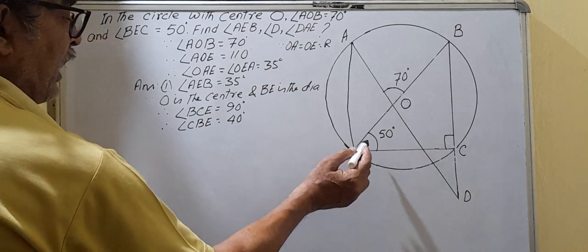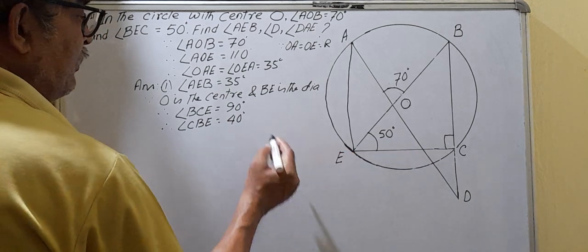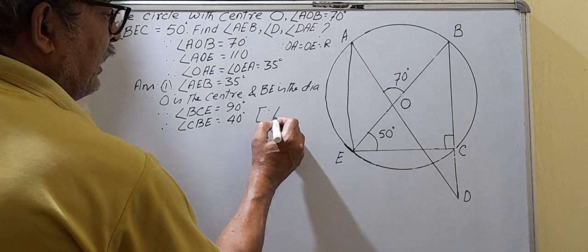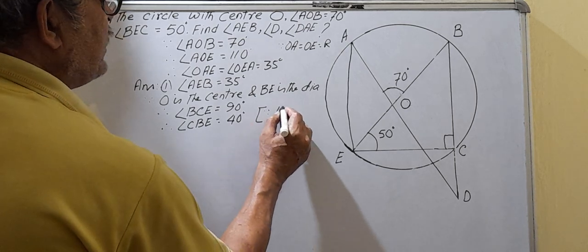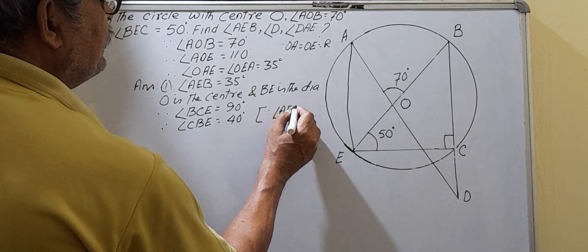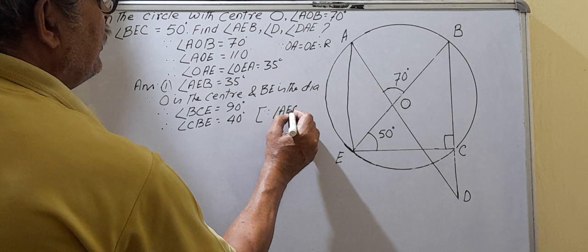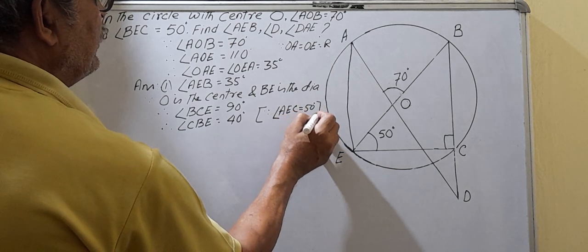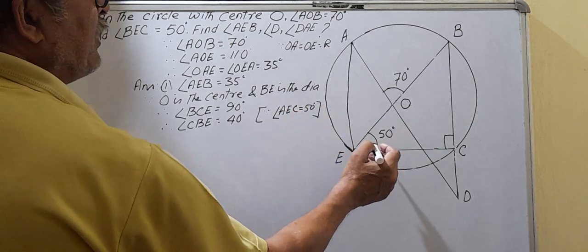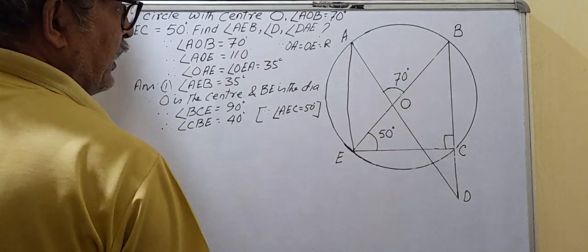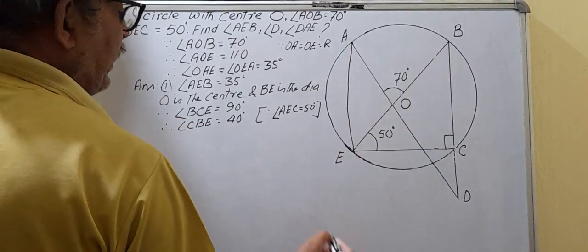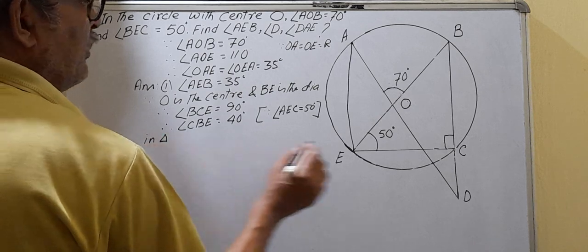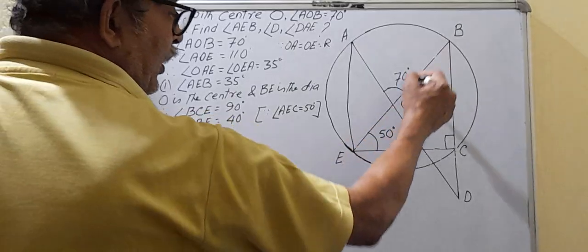In triangle BCE, angle BCE = 90 degrees and angle AEC = 50 degrees is given. So 90 + 50 + 40 = 180 degrees, giving angle CBE = 40 degrees.